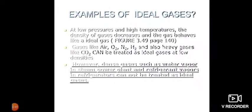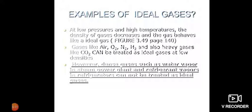Examples of ideal gas: at low pressure and high temperature, the density of gases decreases and the gas behaves like an ideal gas. Gases like air, oxygen, nitrogen, hydrogen, and also heavy gases like CO2 can be treated as ideal gas at low density.